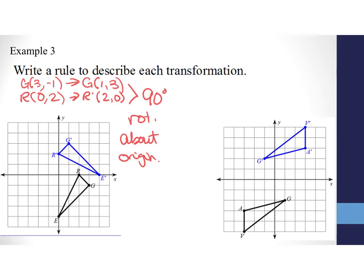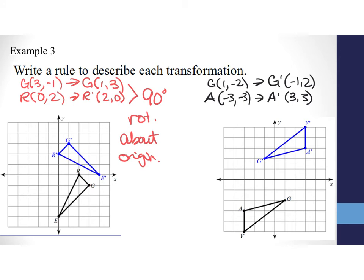For triangle GAV, G is at (1, -2) and G prime is at (-1, 2) — the numbers stayed in the same positions but the signs changed. Checking A at (-3, -3), A prime is (3, 3), and V at (-3, -5), V prime is (3, 5). Because the numbers stayed the same and only the signs changed, this tells us the graph went through a 180-degree rotation about the origin.